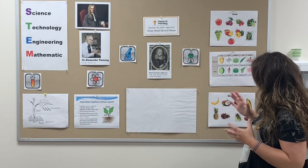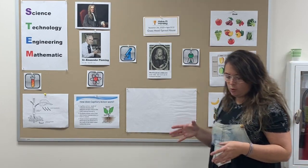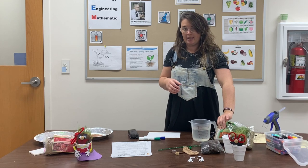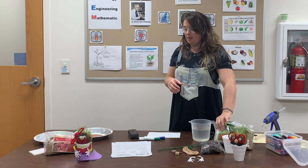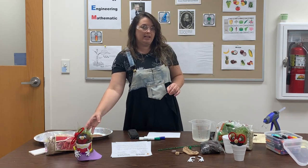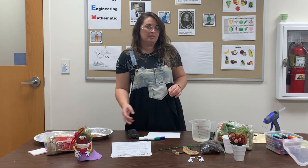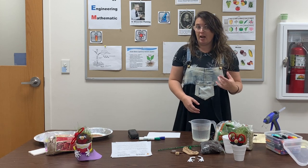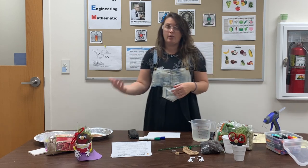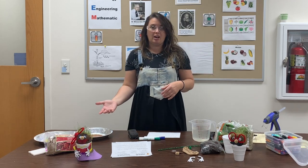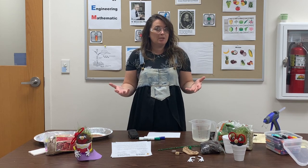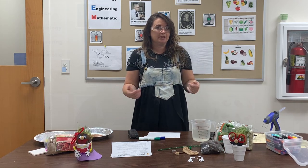Whenever you look at your seeds that you got, you've got grass seeds and you have radish seeds. Your grass is your monocot, your radish is your dicot. So watch when they grow the difference between the two plants.